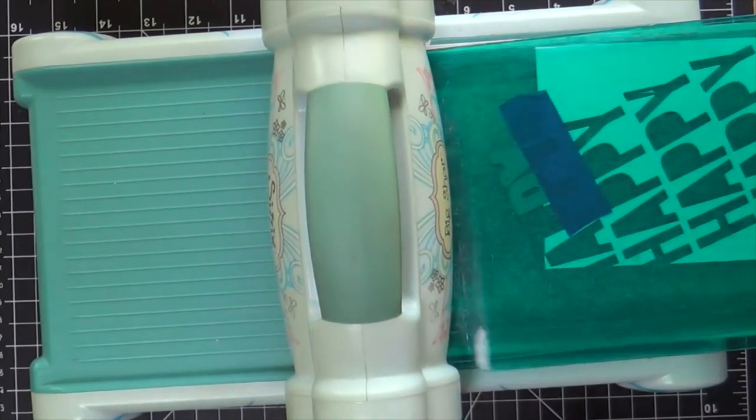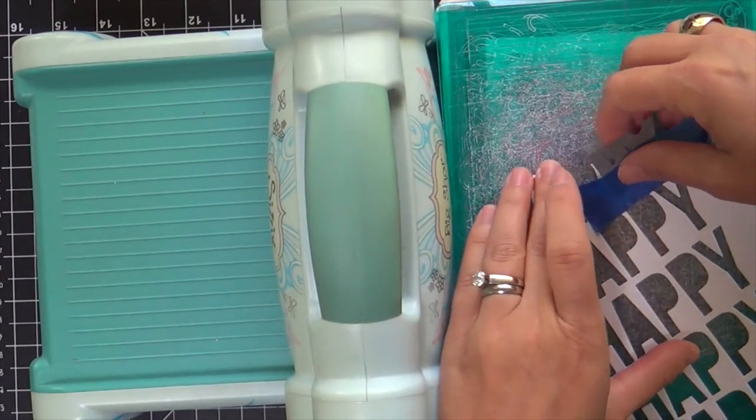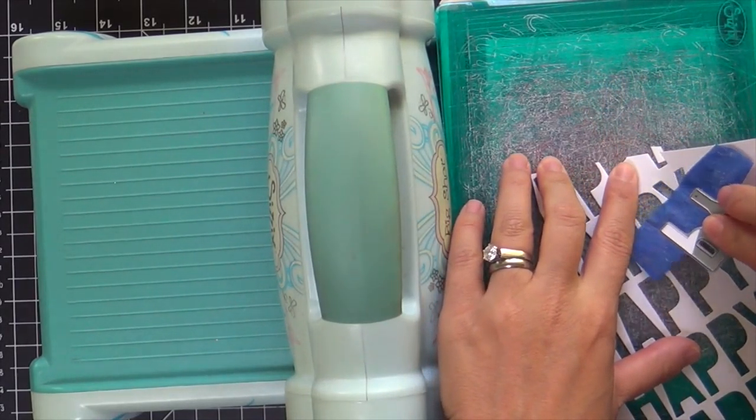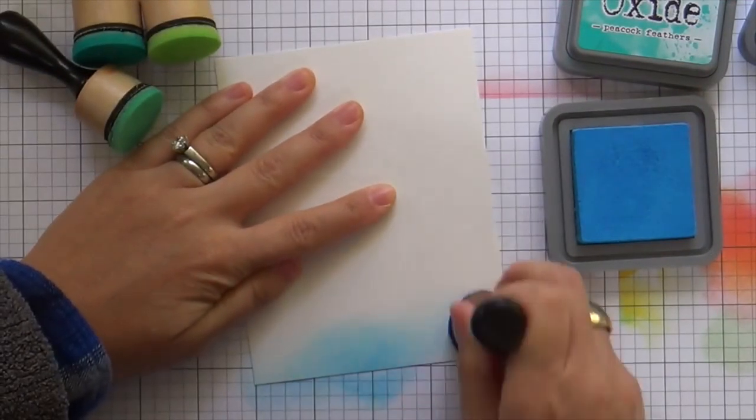you know, when you die cut words like hello with two L's or happy with two P's—you get where I'm going. Anyway, I'm die cutting this repeatedly on a panel of Neenah Solar White. Now behind